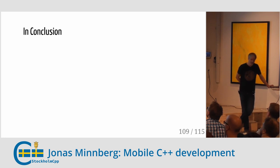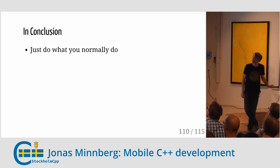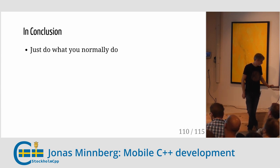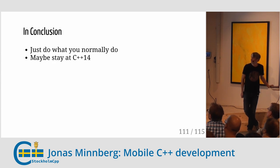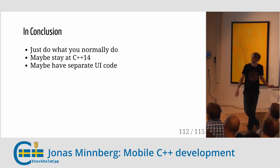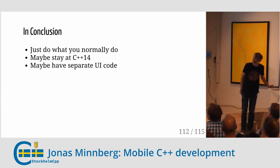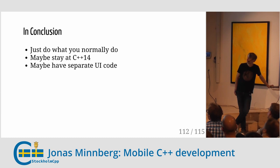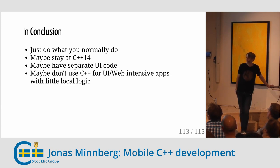In conclusion, just do what you normally do — it's still C++ even on mobile. The parts that are different don't have much to do with C++. Maybe stay on C++14 for now. Maybe have separate UI code if you have an application with lots of UI, as cross-platform UI with C++ in the same app is tricky. And maybe you don't use C++ at all if you have only UI.